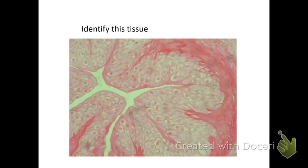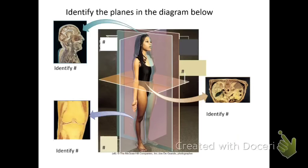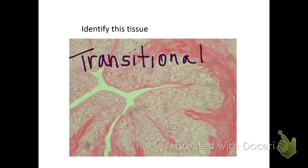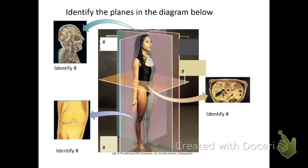Take a second and figure that one out. This one is transitional epithelium, because it goes from the cuboidal to the flat. Your notes say they're dome-shaped, and it stretches out. This is in your bladder. This picture you'll see on page 19 of your lab book.